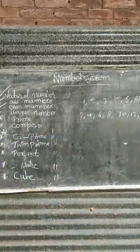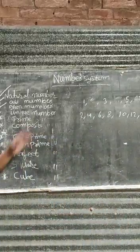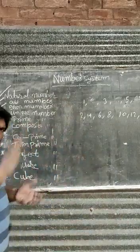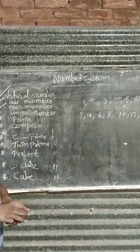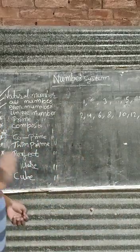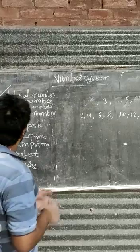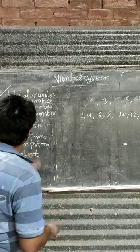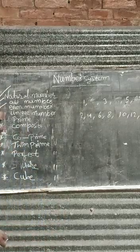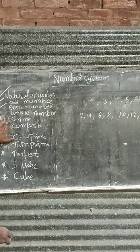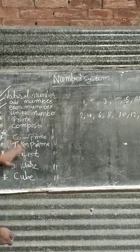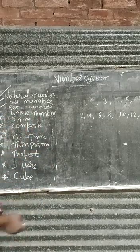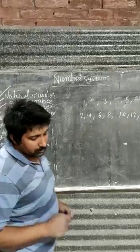In other words, natural numbers are divided into 3 parts. Natural numbers, in other words, are divided into 3 parts. First, unique number. Second, prime number. And third, composite number. What is the unique number?